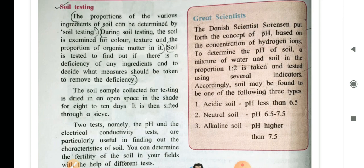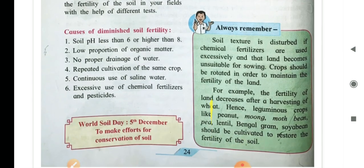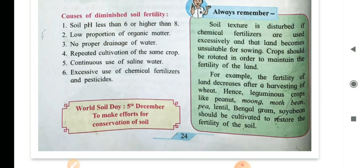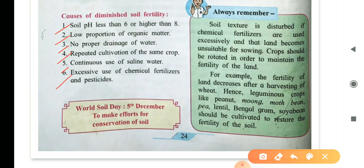Causes of diminished soil fertility. What are the causes? First one, soil pH less than 6 or higher than 8. Two, low proportion of organic matter. That means dead plants and animals. Third, no proper drainage of water. Four, repeated cultivation of the same crop. Five, continuous use of saline water. Saline is salty water. Six, excessive use of chemical fertilizers and pesticides.